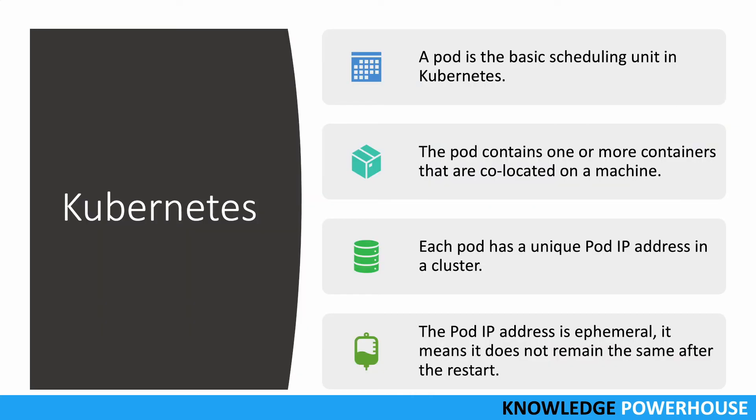In short, a pod is the basic scheduling unit in Kubernetes. A pod may contain one or more containers co-located on a machine, and each pod will have a unique pod IP address in the cluster. The pod IP address is ephemeral - if a pod goes down it will change and won't remain the same after restart.